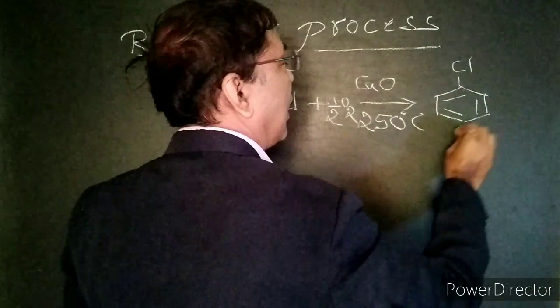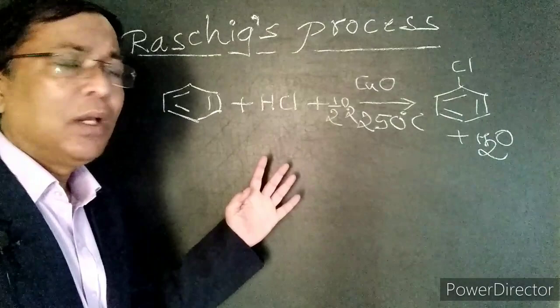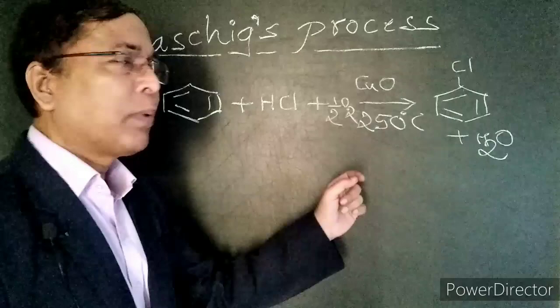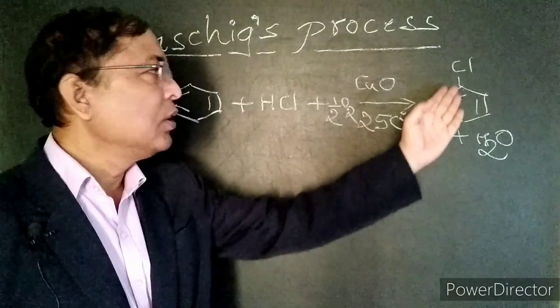What is Rasig's process? When benzene is heated with HCl in the presence of cuprous oxide with half mole of oxygen, we get chlorobenzene and water.